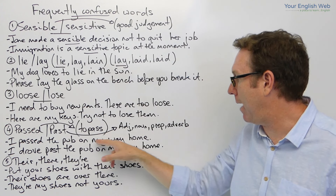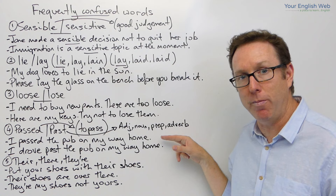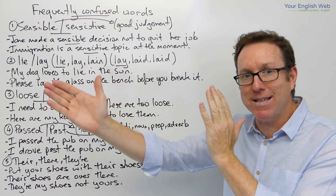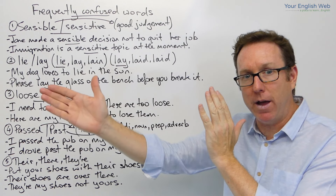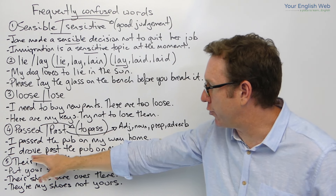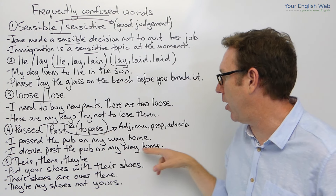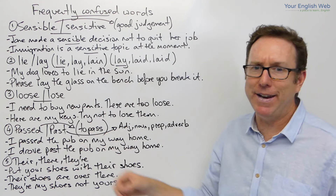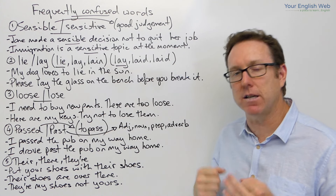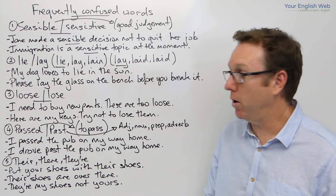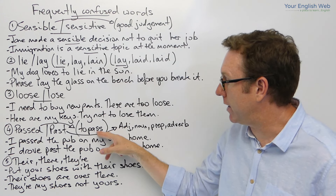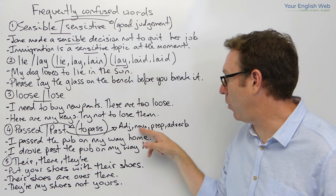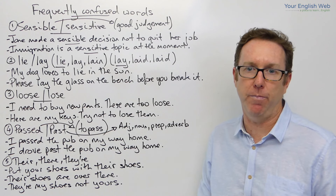I passed the pub on my way home, meaning that I went by the pub. And I drove past the pub on my way home — here past is an adverb. Now, this is confusing for native speakers as well. But remember, if you need a verb use passed, and if you use it in any other way, that's past — that's how we distinguish between the two.